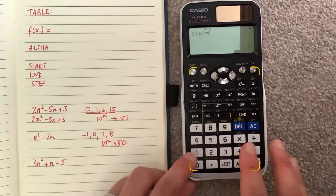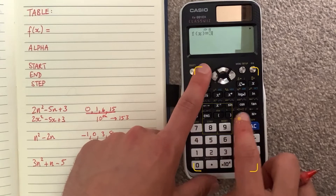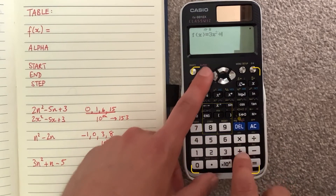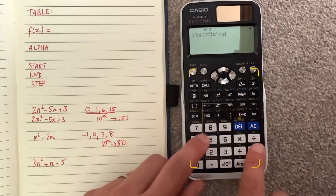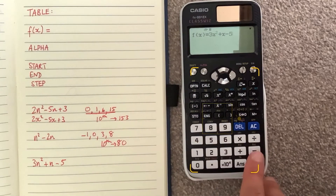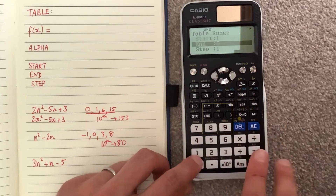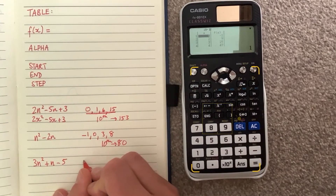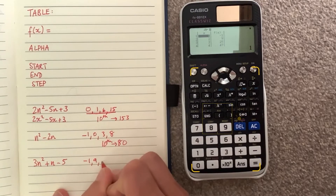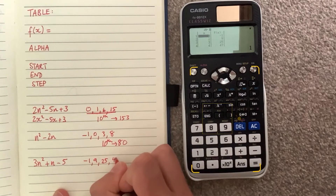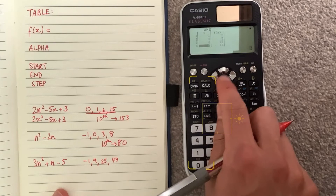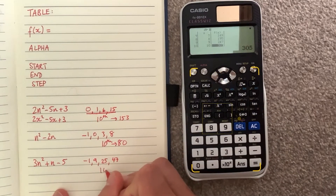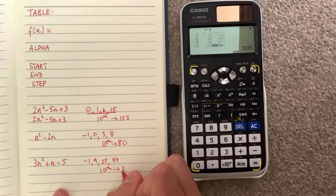For the last sequence, going back to table mode, I enter 3x squared plus x minus 5, again with the range from 1 to 10. The sequence starts at minus one, nine, twenty-five, forty-seven, and scrolling down to the tenth term gives three hundred and five.